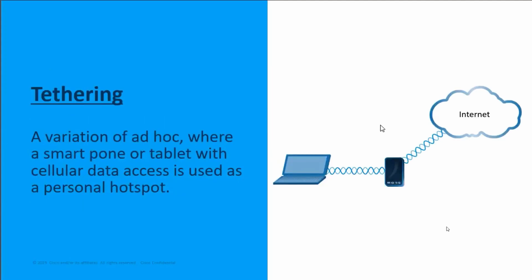Lastly, there's tethering — almost like an extra mode. Tethering is where you have a cell phone or tablet with cellular data access connecting to the cellular internet, but that cellular device is also running as an access point, which we call a hotspot. The cellular device creates a wireless signal for wireless PCs, tablets, and other devices to connect through. Non-cellular devices connect through that cellular data device — that's tethering. It's similar to ad hoc in that there's a peer-to-peer link from your laptop to the cellular device, which then connects out to the cellular data network.